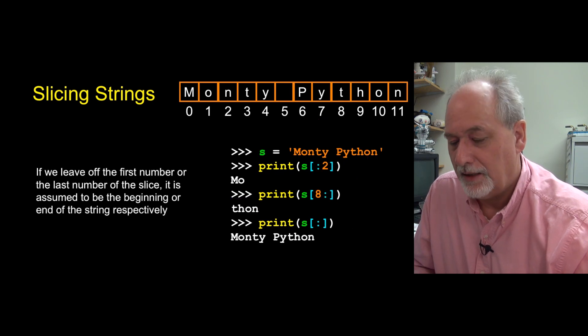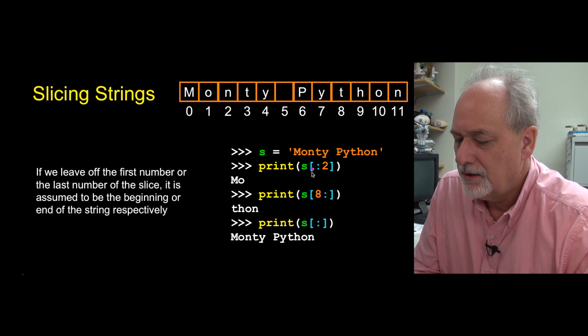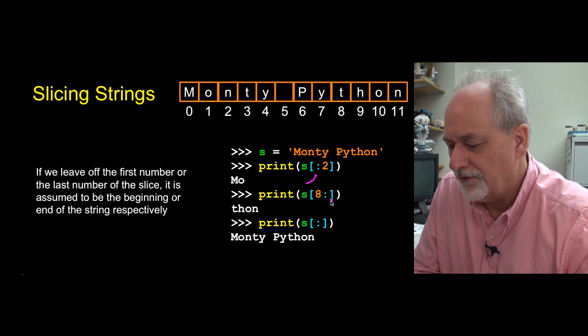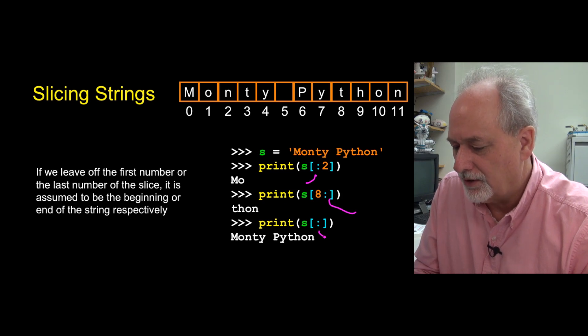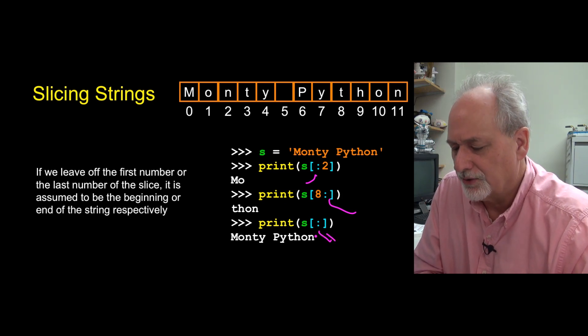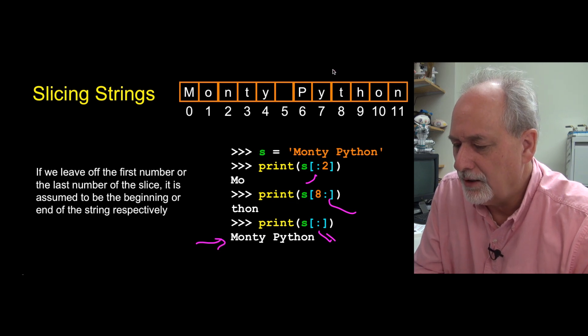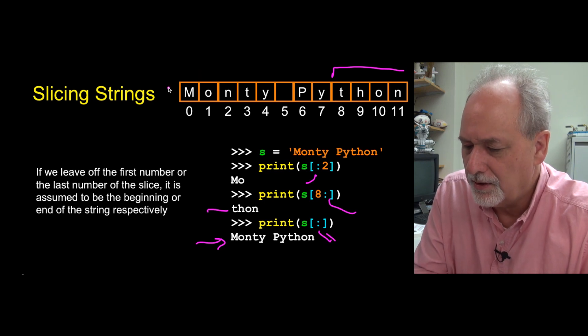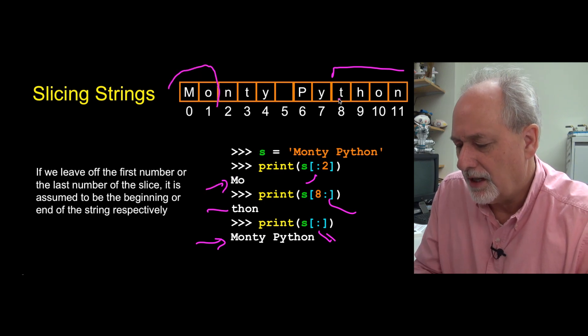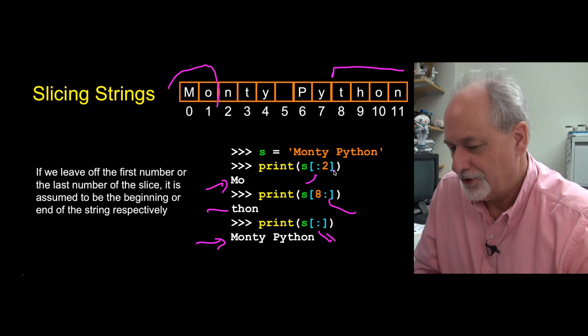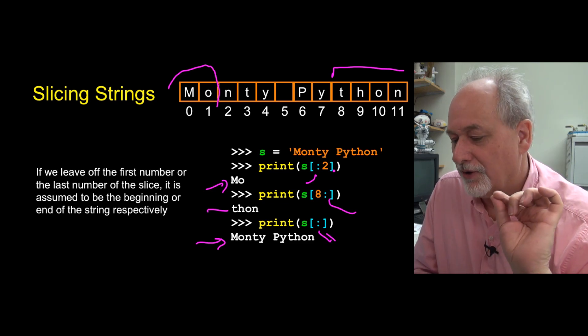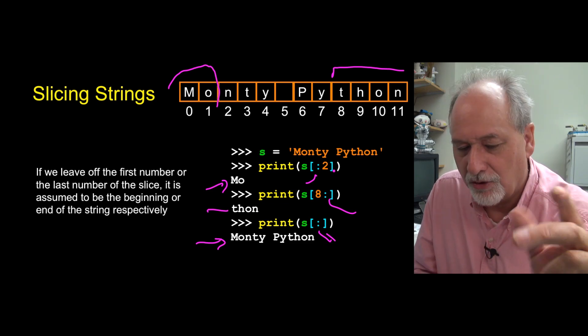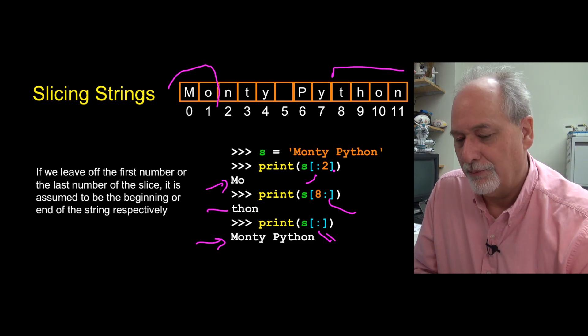Now you can eliminate or omit the first or last. If you eliminate the first, it assumes the beginning of string. If you eliminate the second, it assumes the end of the string. From beginning to end is the whole string. Eight through the end is 'than', and up to but not including two is 'mo'. So that's pretty simple. Once you've got the rest of slicing and string indexing, the notion of eliminating the first or second of the colon expression I think is actually pretty intuitive, pretty nice.